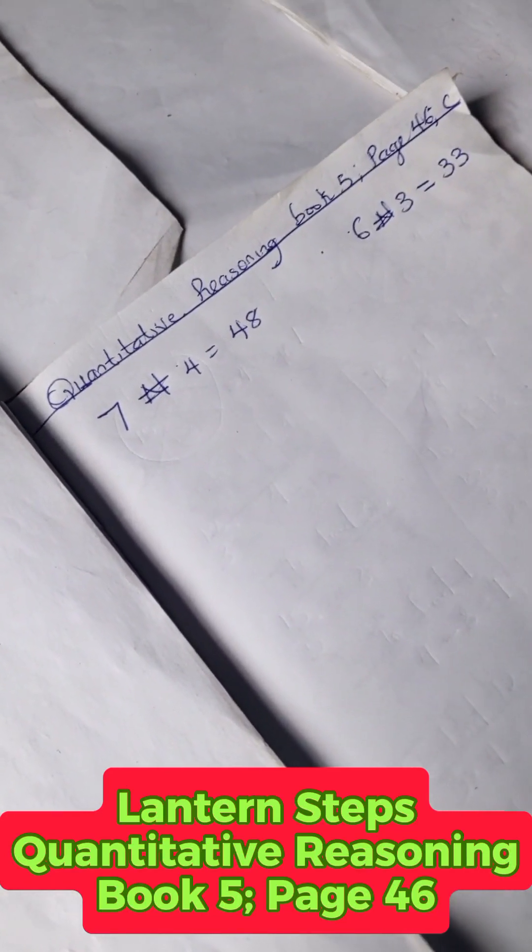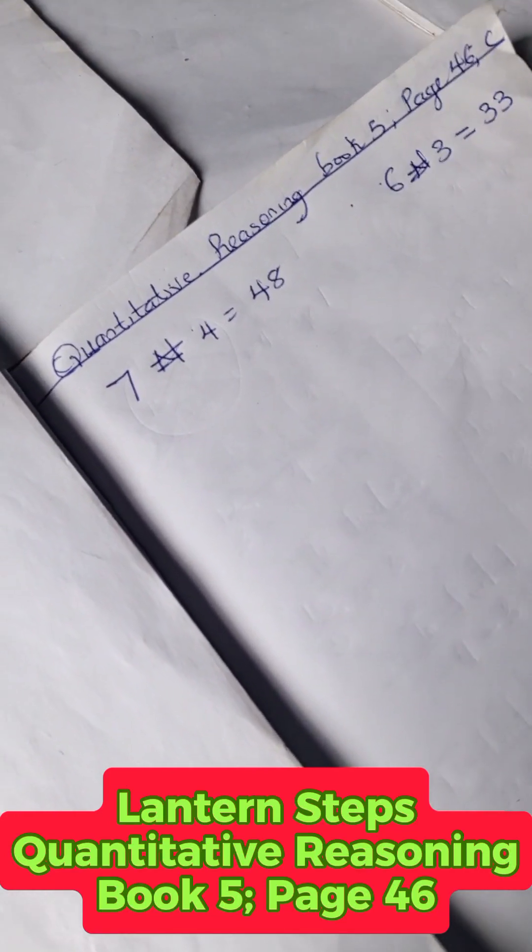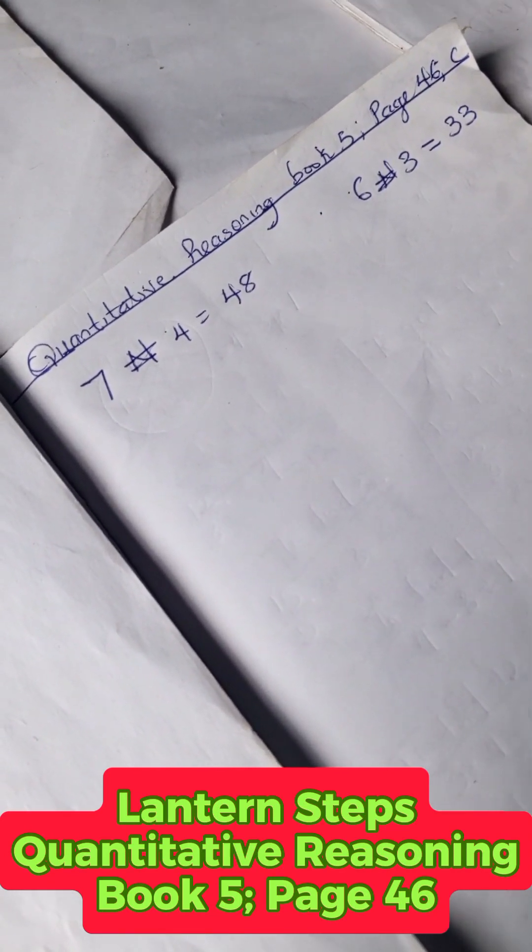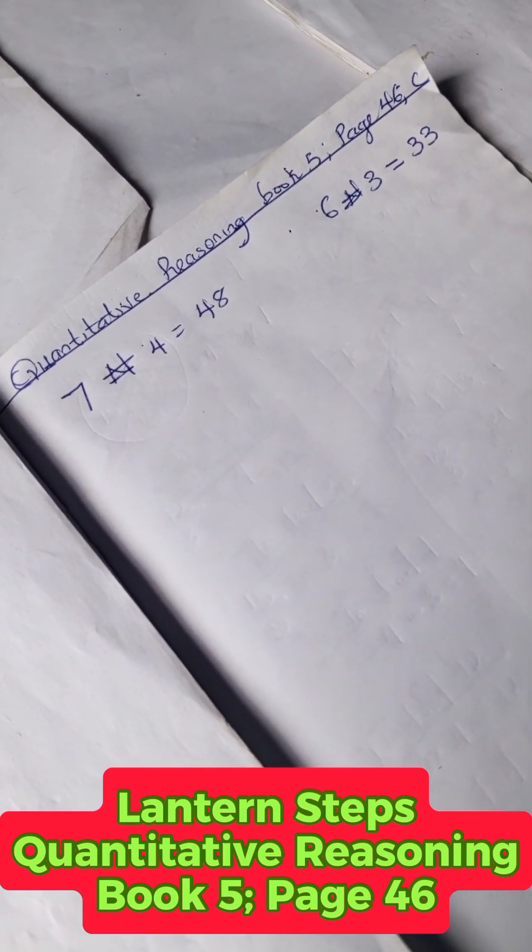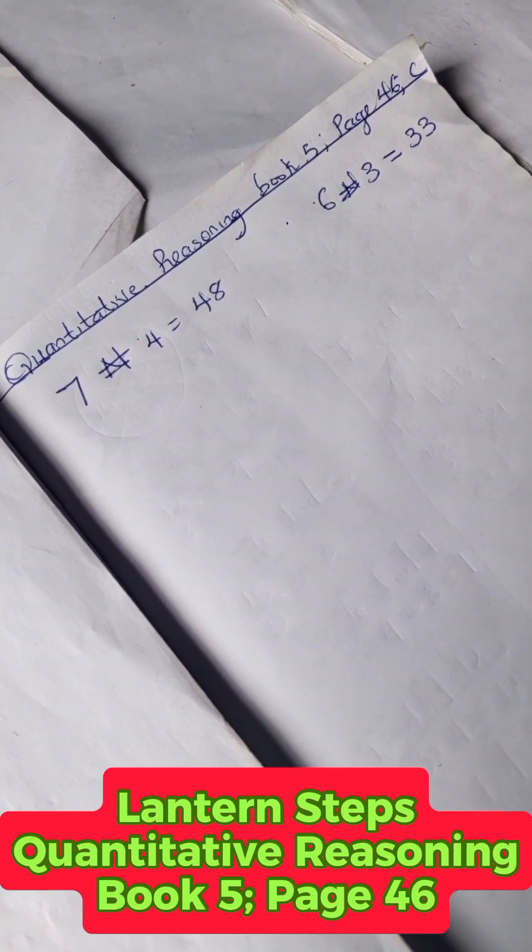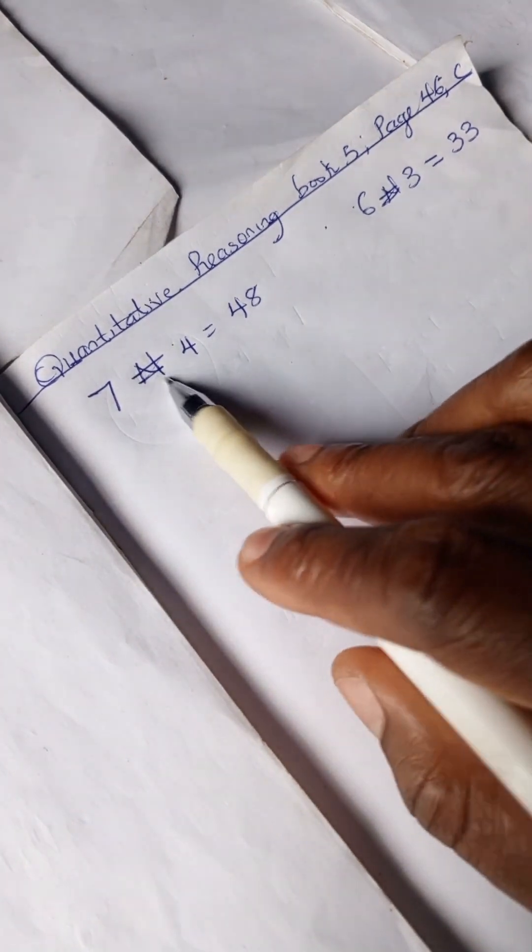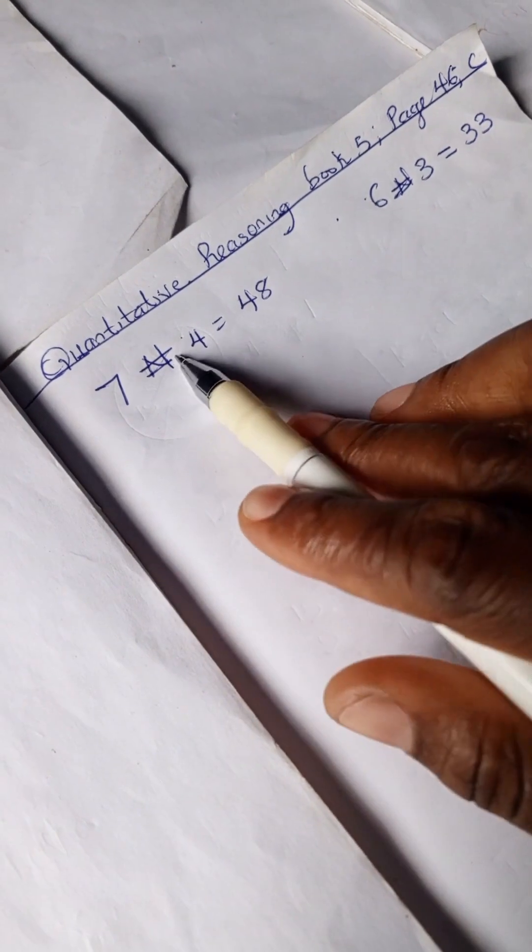Hello, welcome to Quantitative Reasoning Solution Session. Today we have a problem from Lantern Step Book 5, page 46. We have this: 7 ## 4 = 48. Now looking at this...